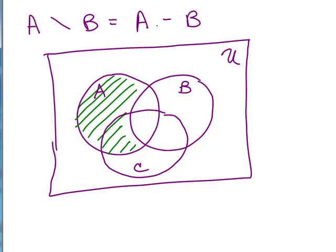Now what if I wanted A take away B complement? You would shade everything except what I have here in green and so on. So I'll do some more complicated problems like that on the next video.